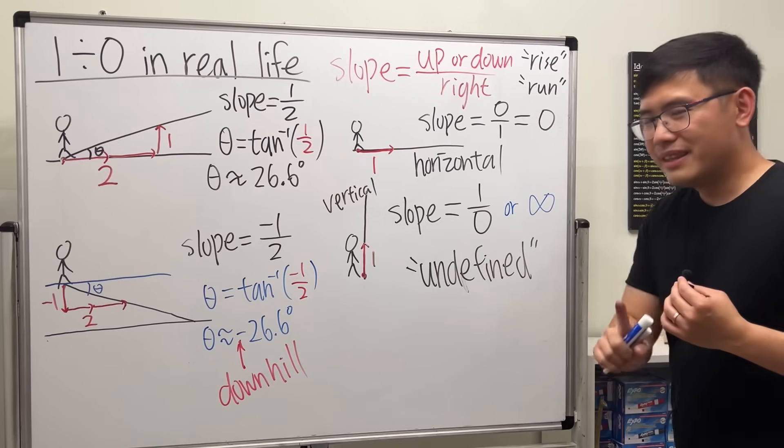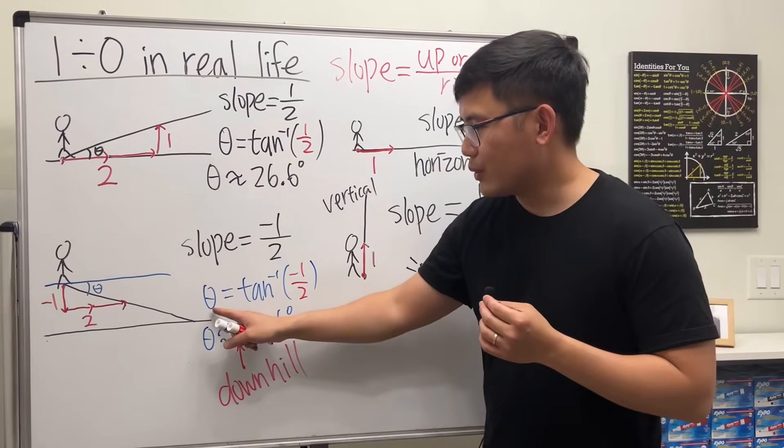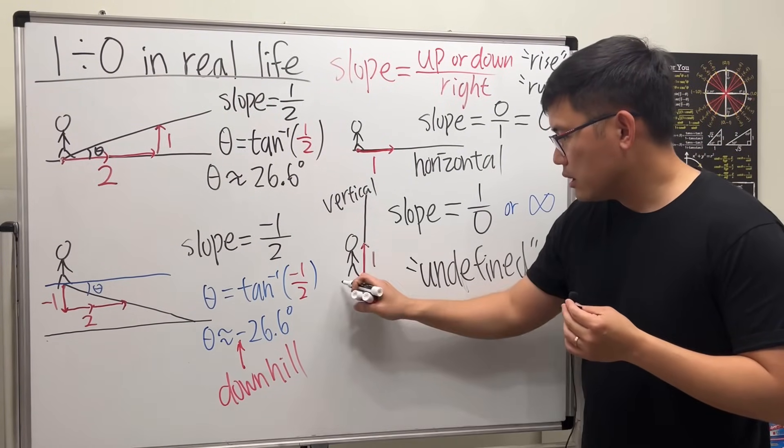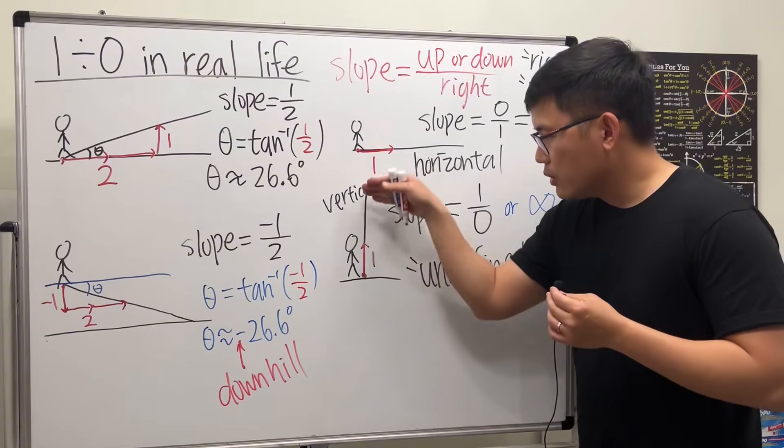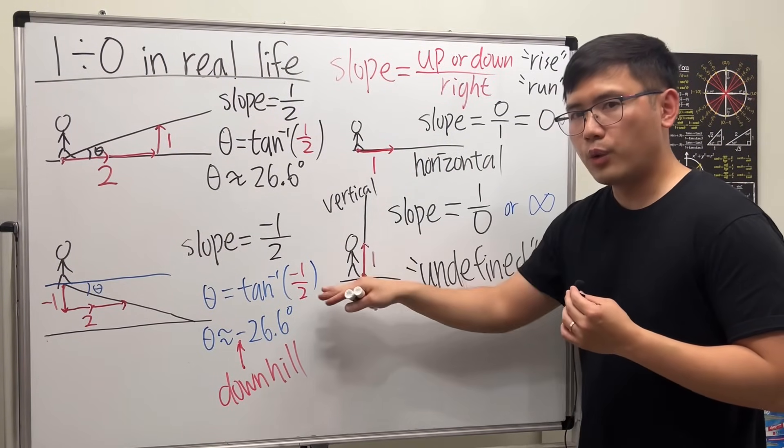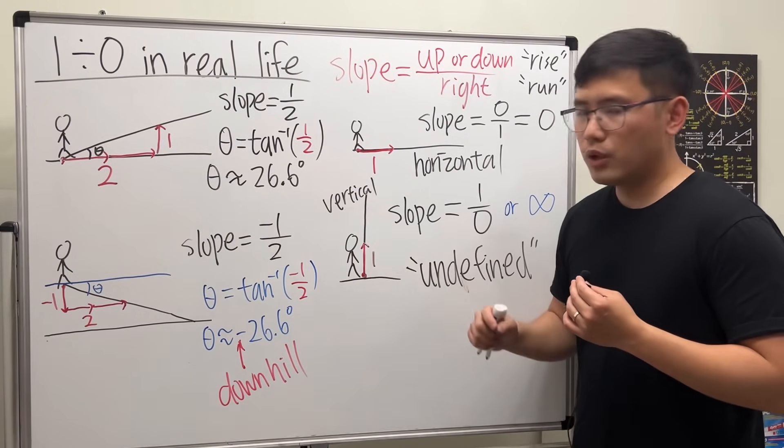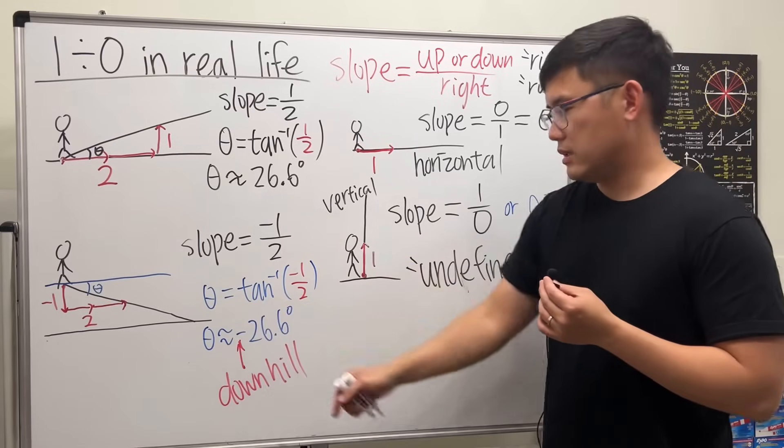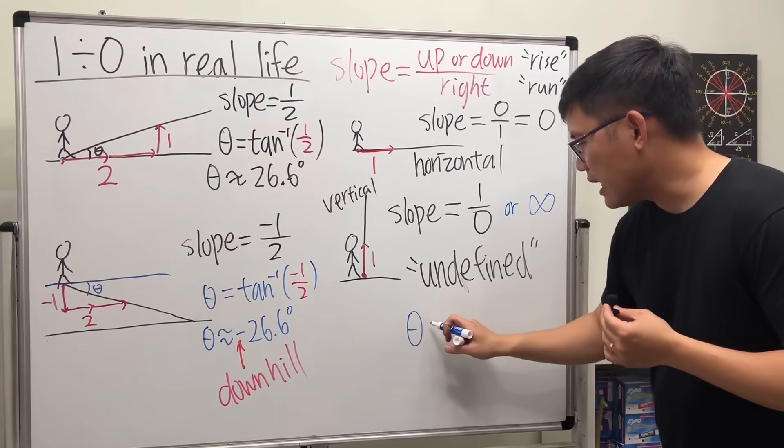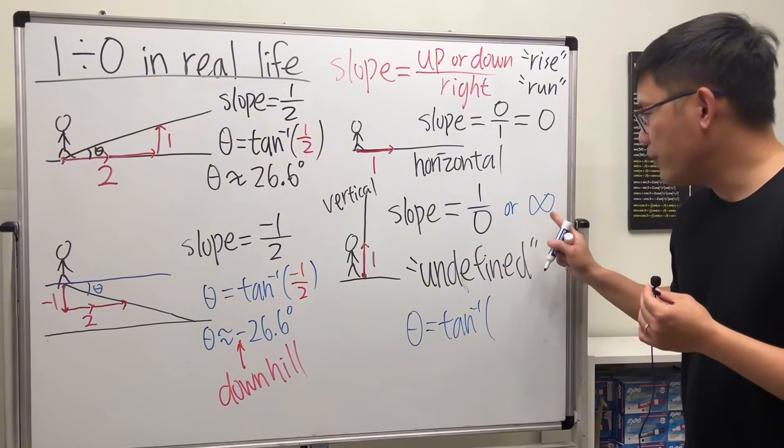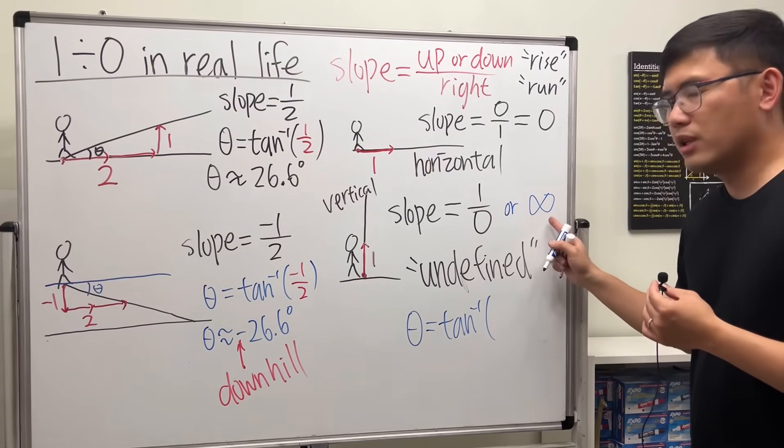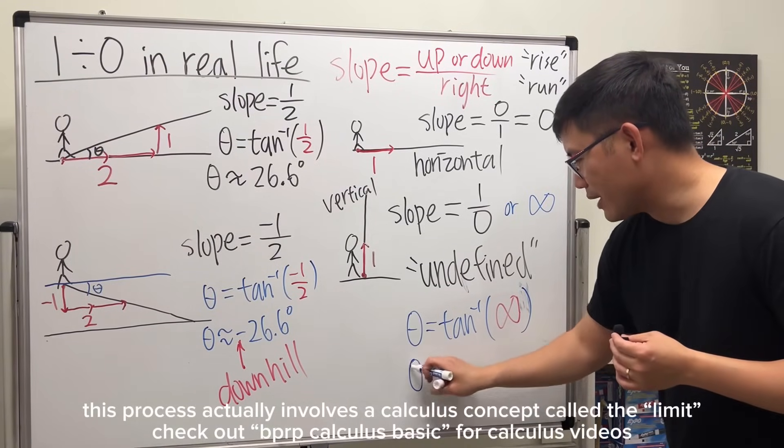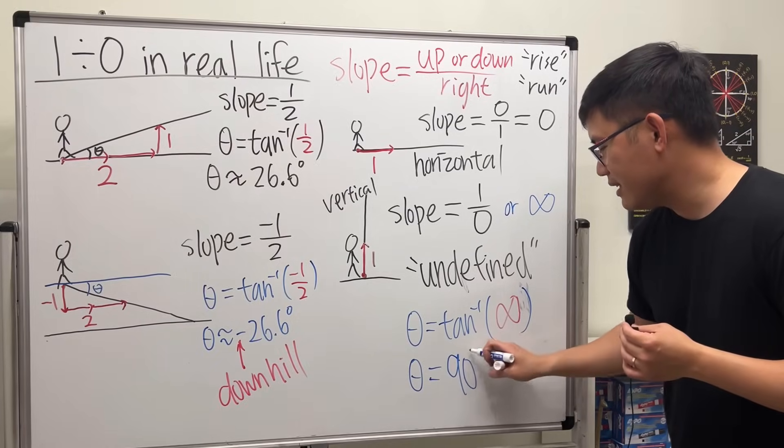Now here's the cool part - we'd like to know the angle. We know in this case, the vertical wall is perpendicular to the horizontal road, so this angle is 90 degrees. We can see that from the picture. But if you say theta equals inverse tangent of our slope, don't use one over infinity - just put down infinity. If you enter this, you get theta equals 90 degrees.